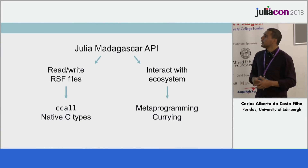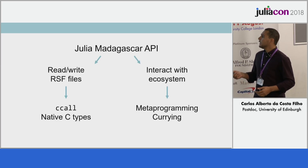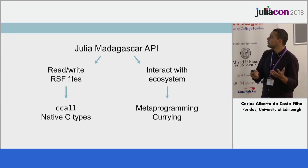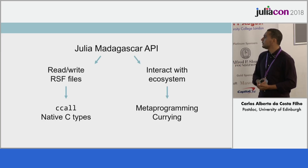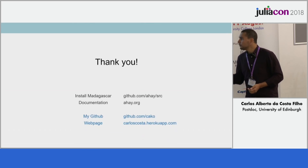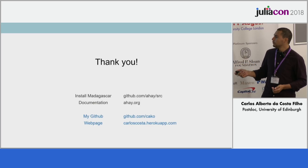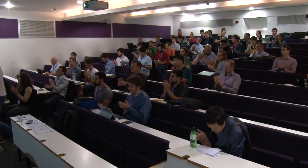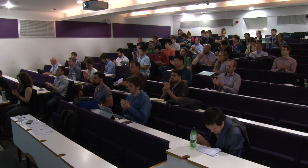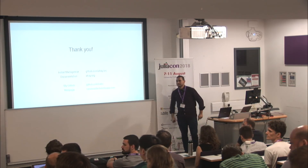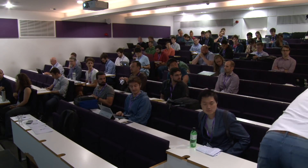To summarize this Julia Madagascar API: it can read and write files, which is the most basic thing. It uses C calls and native C types to do that, making it easy to debug and code. It also interacts with the ecosystem through two functionalities of the Julia language. Thank you very much — if you're interested in Madagascar, check the documentation; if you're interested in this code, visit my GitHub or my webpage.